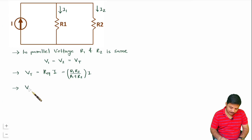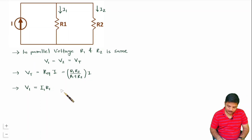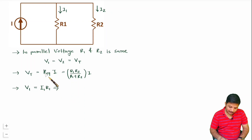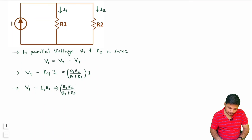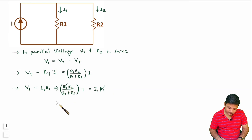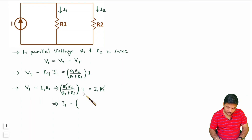Calling that V1, by Ohm's law V1 equals I1·R1. Since V1 equals Vt, we substitute: (R1·R2)/(R1+R2) times I equals I1·R1. The R1 terms cancel, giving us I1 equals R2 divided by (R1+R2) times I.